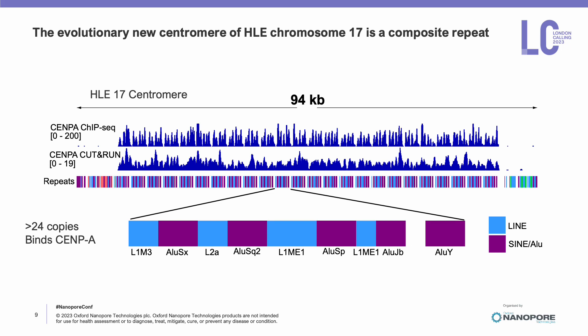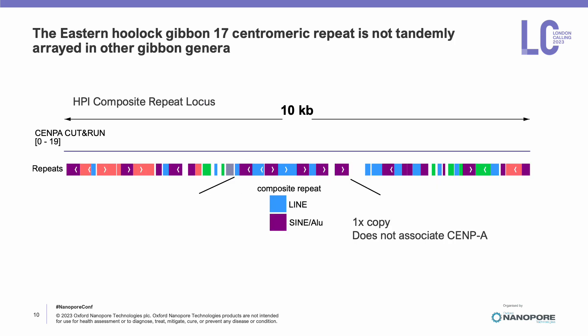Repeated over 20 times, this repeat, made up of a combination of LINE and ALU retrotransposable elements, seems to have been co-opted as a centromere satellite in the eastern hoolock gibbon. However, if we take a look at the same locus in the pileated gibbon, we do find the same organization of LINEs and ALUs, but it's only found in one copy and does not have any evident CENP-A association using CENP-A CUT&RUN. This leads us to suspect that the expanded locus was lineage specific within the hoolock genus.